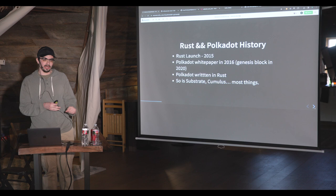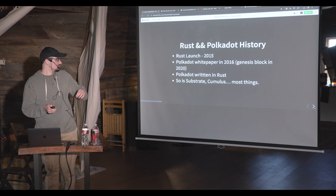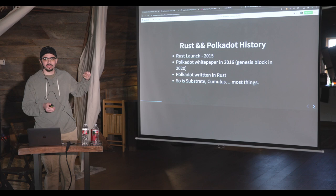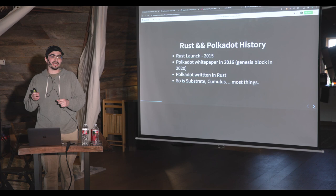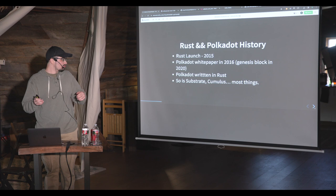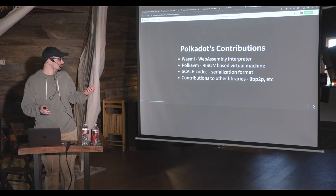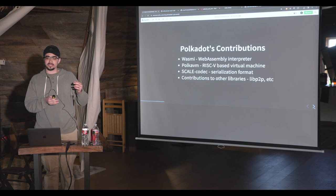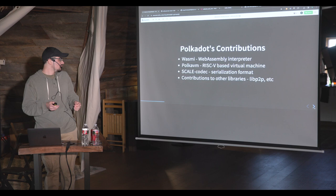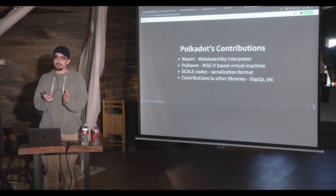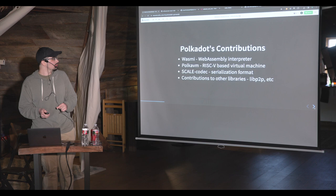Rust launched in 2015, the Polkadot white paper came out in 2016, and the first Genesis block for Polkadot was generated in 2020. Polkadot was written in Rust — you can see how they're very closely linked. They were starting to engineer Polkadot close to the early versions of Rust, and you can actually see that progression in the code. Polkadot also has lots of contributions to the Rust space: WASME (WebAssembly interpreter), Polkadot VM (a RISC-V based virtual machine), the SCALE codec (a simple binary serialization format), and contributions to libraries like libp2p used throughout not just the blockchain ecosystem but the wider Rust ecosystem.